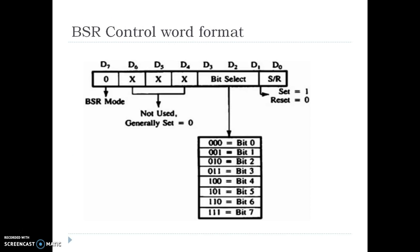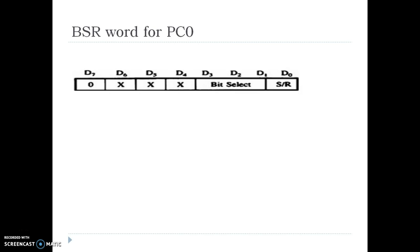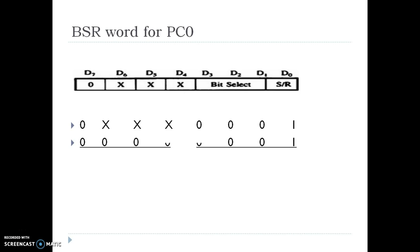We are going to use the bit-set-reset control word format. D7 will be 0 because it is BSR mode. D6, D5, and D4 are not used, so they are generally set to 0. Pin numbers range from 0 to 7, so bits D3 to D1 are used to select the pin number. If D3, D2, D1 are all 0, that means we have chosen pin number 0; if 001 then pin number 1, and so on. The value to be sent on this pin is set in bit D0, which is either 1 or 0. For our example, because we need to set the output data of PC0 as 1, D7 is 0, D6, D5, D4 are 0, D3, D2, D1 are 0, and D0 is 1. So our control word becomes 01H, again hexadecimal.